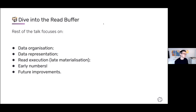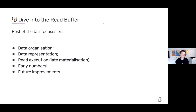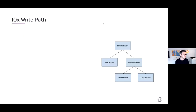The rest of the talk I'm going to dive into the read buffer now that I've given an overview of where we're coming from. I'll look at how we lay things out, the representation, some of the compression, what I mean by late materialization, and some early comparative numbers. Let's just talk about where the read buffer sits. This is a rough write-path diagram — these aren't necessarily different processes, but more how data flows through the IOx system.